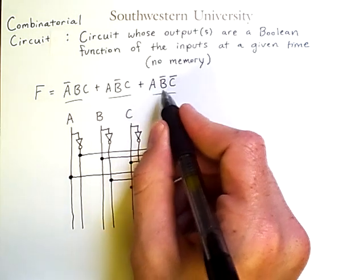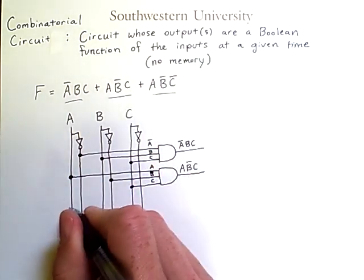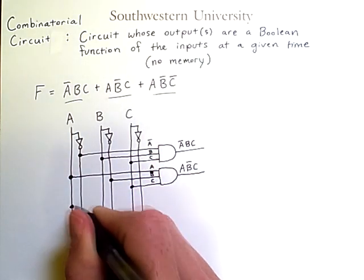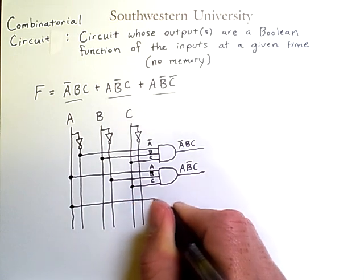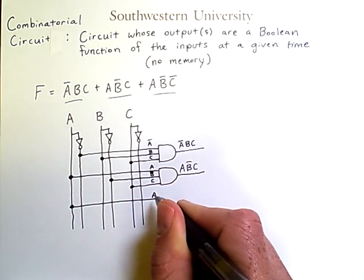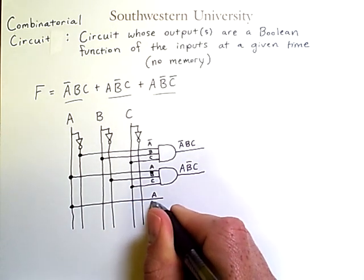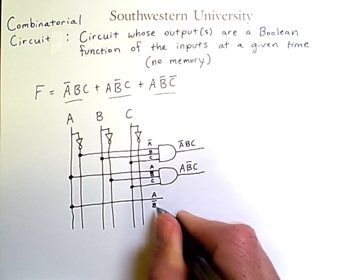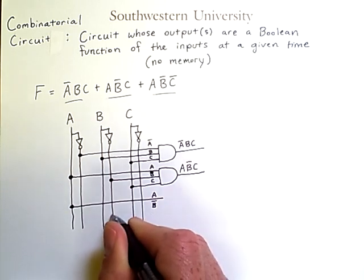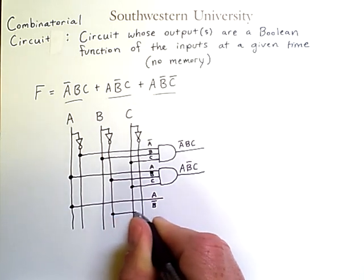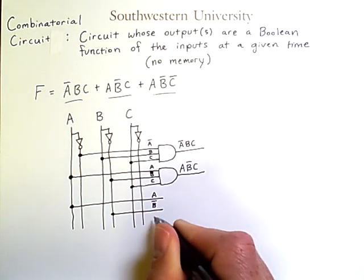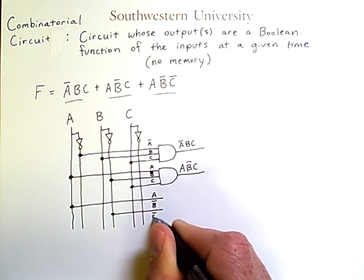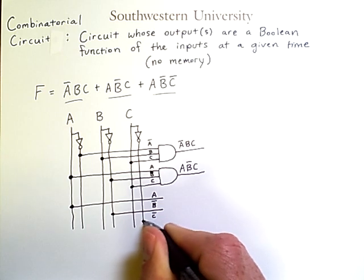Finally, we have A and NOT B and NOT C. So, we'll grab A from here. And after that, we want NOT B. That will come from here. And then we want NOT C here.